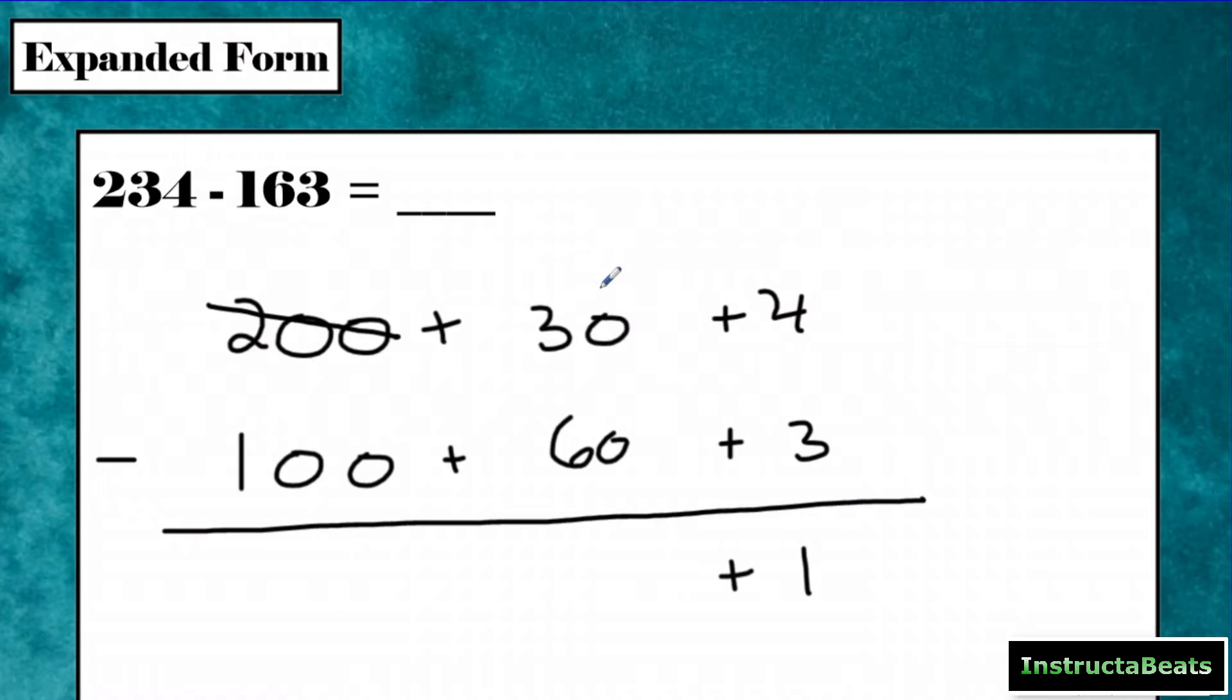Again, we're talking about 10 tens because this is the tens place. So I'm going to give 100 and kind of give it away, or some people like to say borrow, but really it's stealing, I think, because you never give it back, to my tens place. So I had 30, I got 10 tens more, which is 100. When I add those together, I now have 130 in my tens place. So 130 minus 60 is 70.